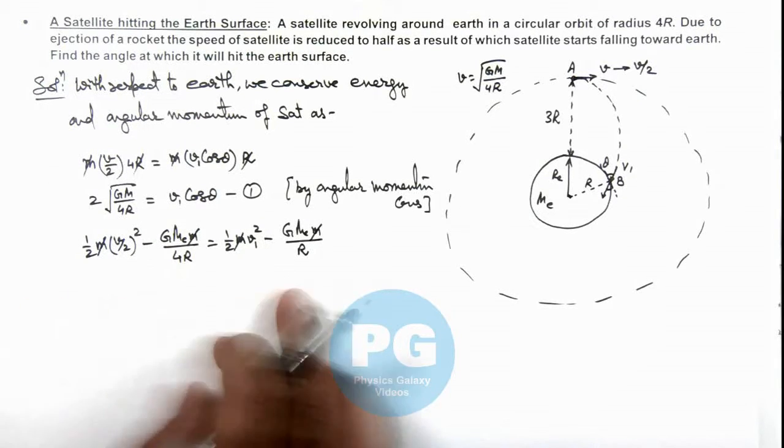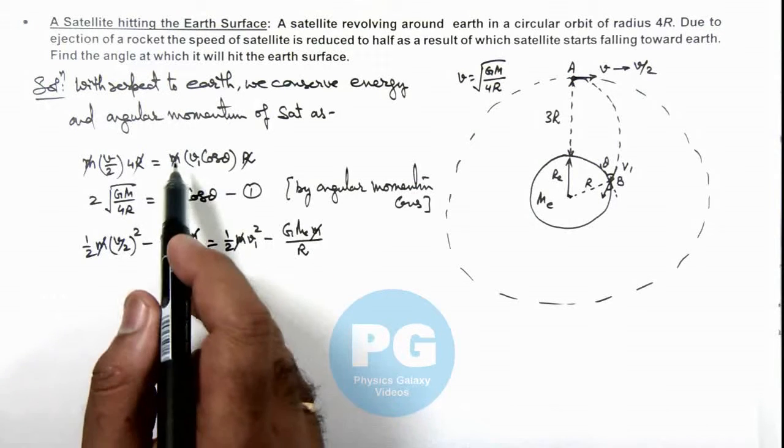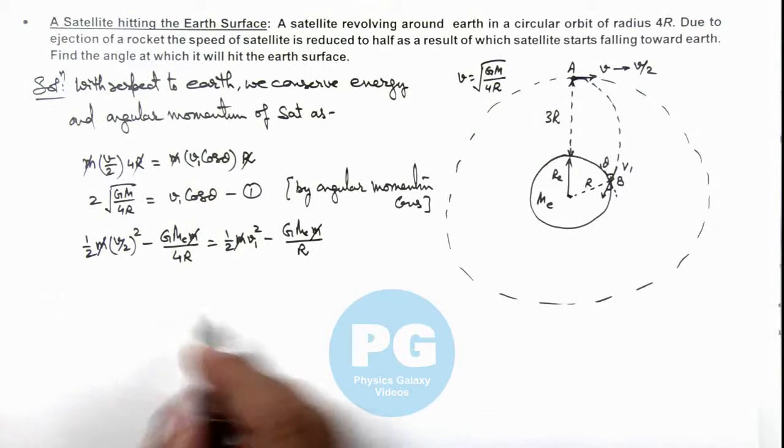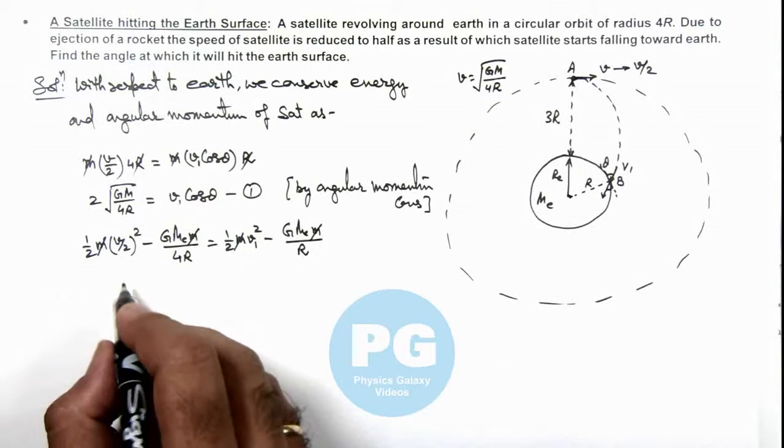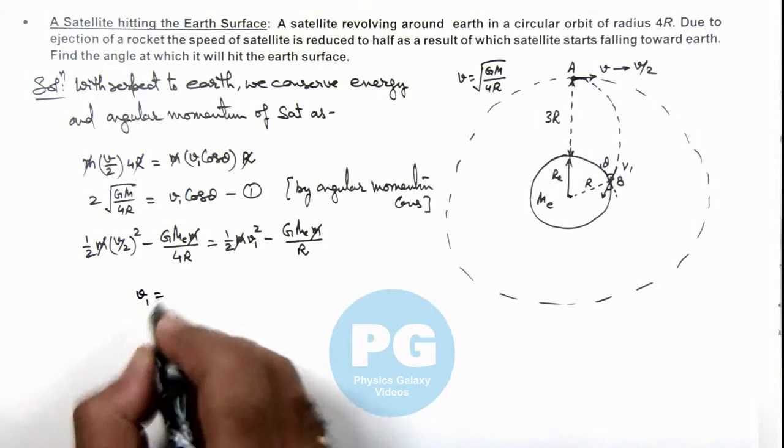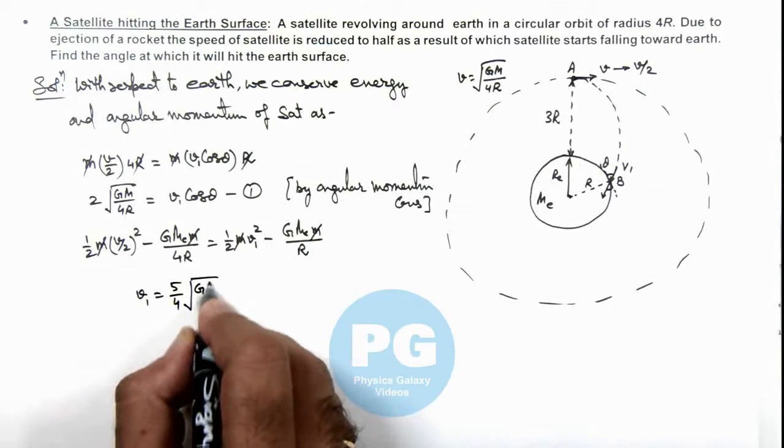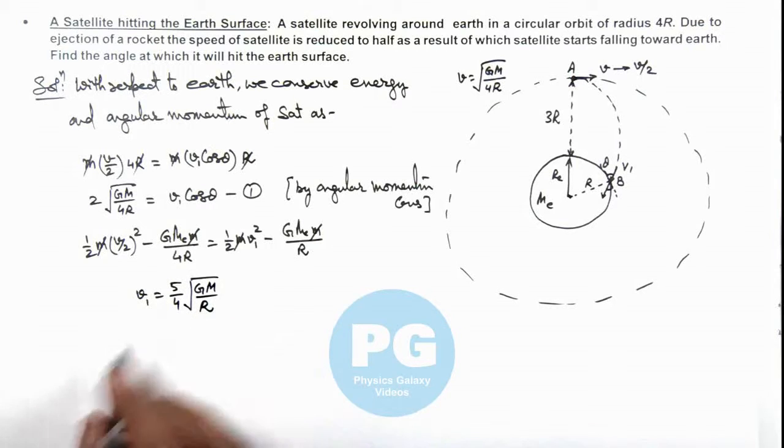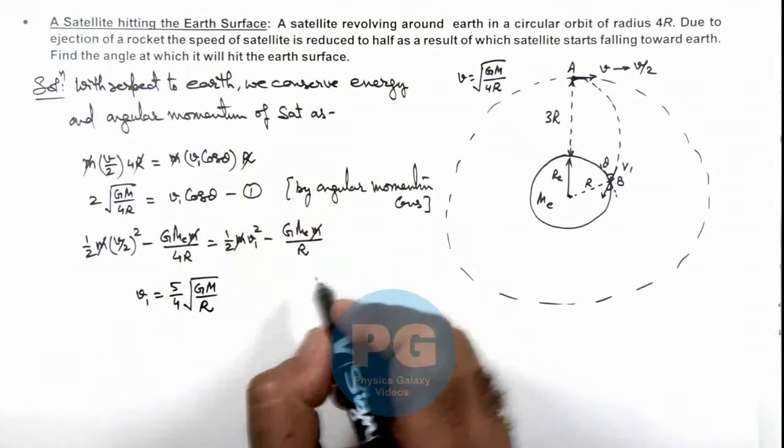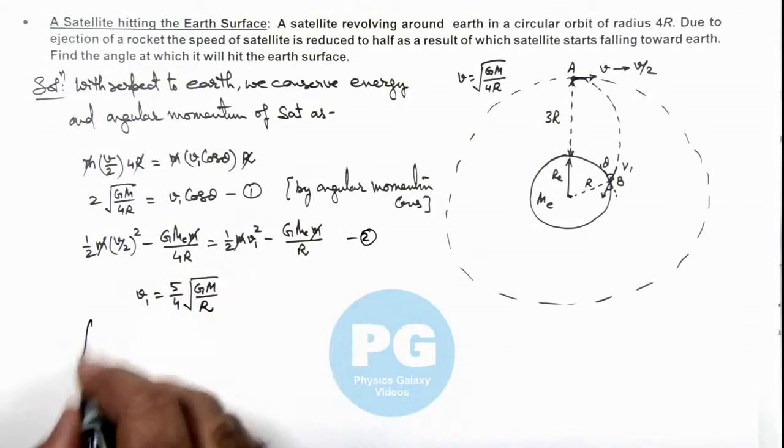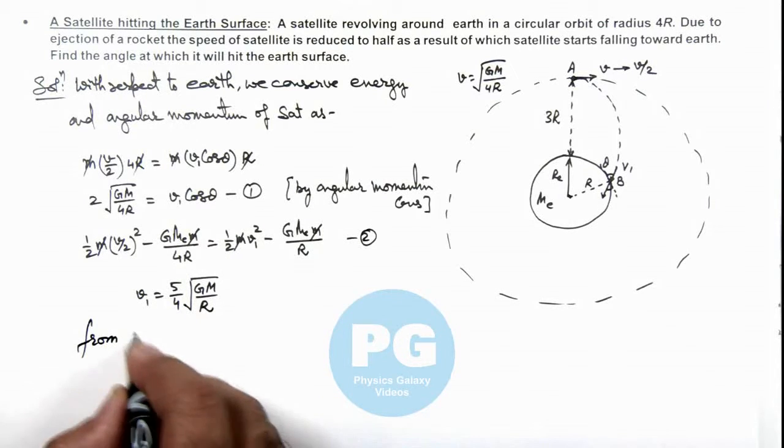I am leaving it as an exercise for you to substitute the value of v1 and finally solve it. The result from this equation for v1 equals (5/4)√(GME/RE). On substituting this value in equation 1, from equation 2 we are getting...